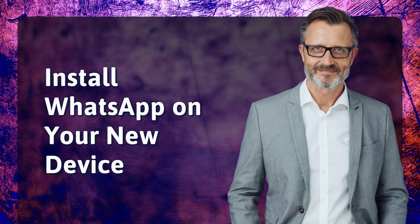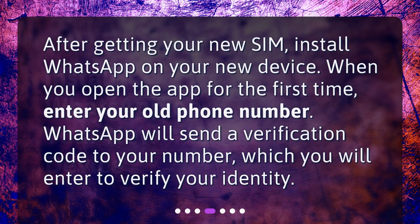Install WhatsApp on your new device: After getting your new SIM, install WhatsApp on your new device. When you open the app for the first time, enter your old phone number. WhatsApp will send a verification code to your number, which you will enter to verify your identity.